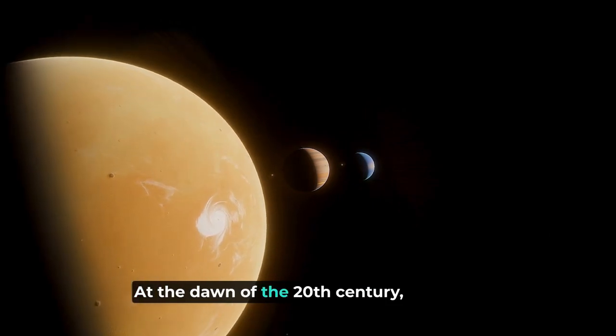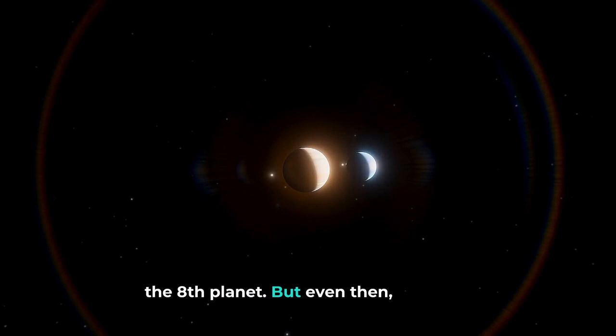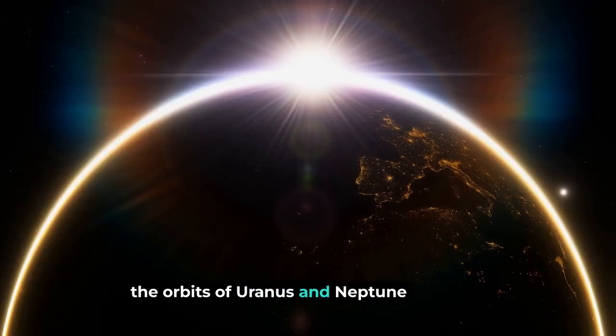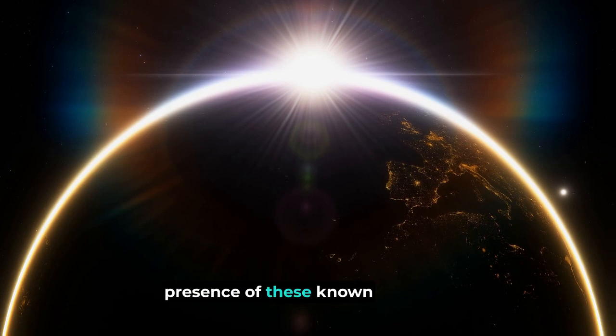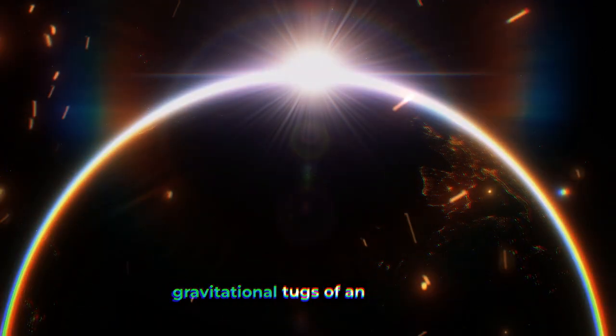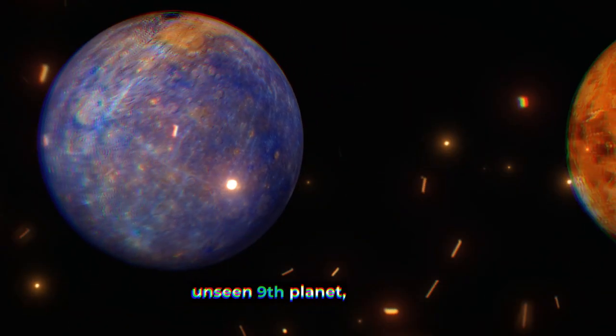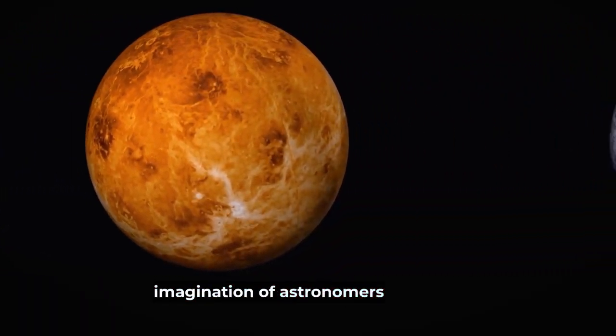At the dawn of the 20th century, the solar system was believed to be capped at Neptune, the eighth planet. But even then, the orbits of Uranus and Neptune exhibited anomalies that couldn't be explained by the presence of these known planets alone. These peculiarities in their orbital paths hinted at the gravitational tugs of an unseen ninth planet, an idea that captured the imagination of astronomers worldwide.